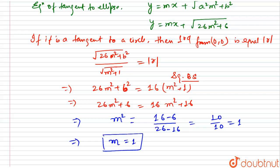Since slope m = tan θ = 1, we get θ = tan⁻¹(1) = π/4. This proves that the common tangent is inclined to the major axis at an angle of π/4.